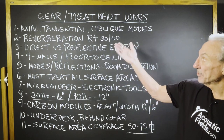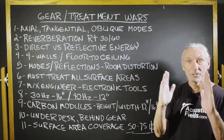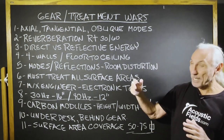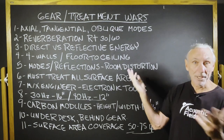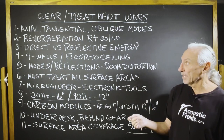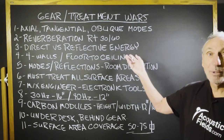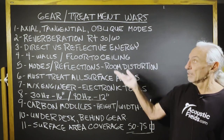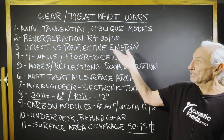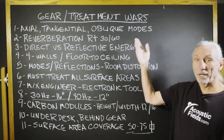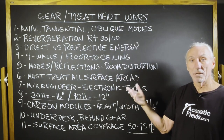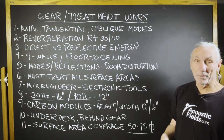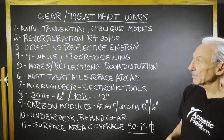We know we have axial, tangential, and oblique modes. Axial between two parallel surfaces, tangential involves four surfaces, and oblique all six. We have reverberation, reflections off surface areas, reflections off the gear, and pressure. Those are our two problems in small rooms — buildup of pressure and reflections for middle and high frequencies.